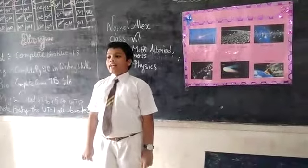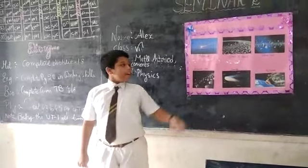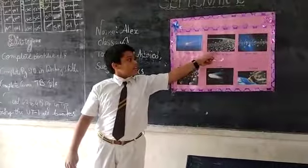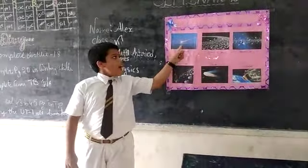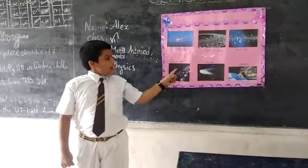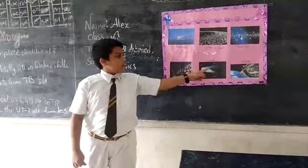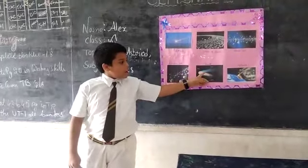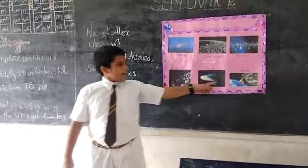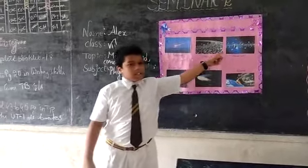Comets are present in groups, and the group of comets is shown like this. This is the meteorite, and this is the belt of meteorites. This is the comet and its parts. This is the asteroid and this is the asteroid belt.